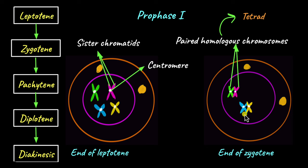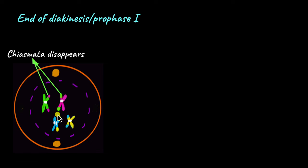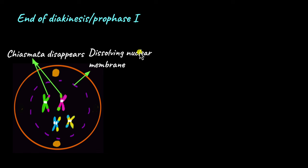As pachytene ends, recombination has fully taken place. As diplotene begins, the tetrad — also known as the synaptonemal complex — begins to dissolve or separate, and the chromosomes are attached to each other only at the sites of recombination, which are known as chiasmata. As diplotene ends and diakinesis progresses, the chiasmata fully disappear and the homologous chromosomes separate. Here you can see how recombination has happened: initially one chromosome was fully green and now has bits of pink, and the other was fully pink and now has bits of green. At the end of diakinesis, the nuclear membrane also begins to dissolve.